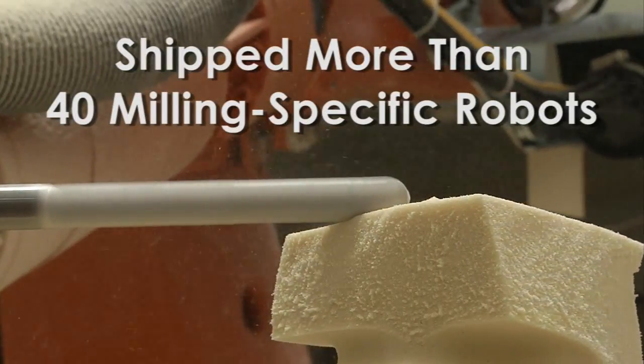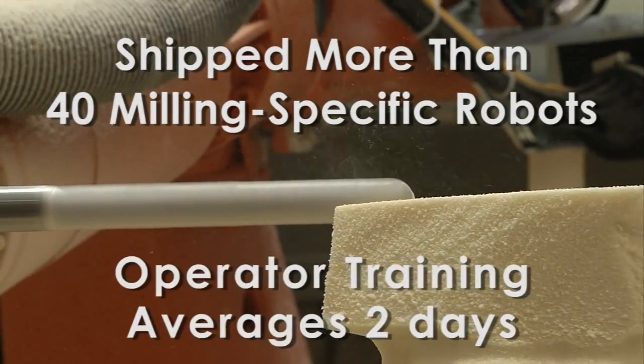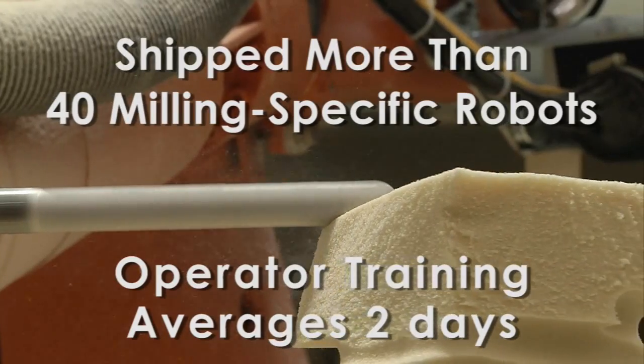We've shipped more than 40 milling specific robots, and the average time for us to train an operator is only two days.